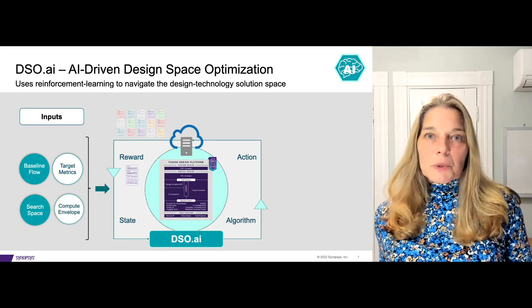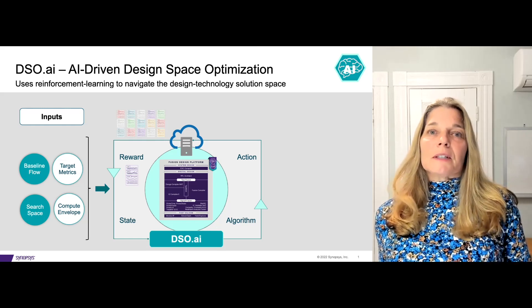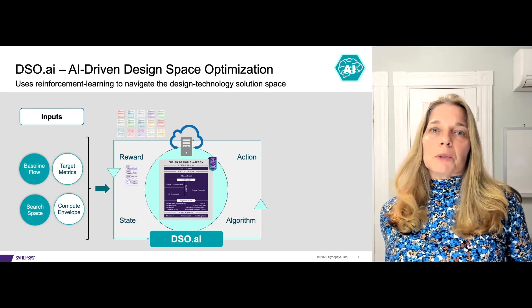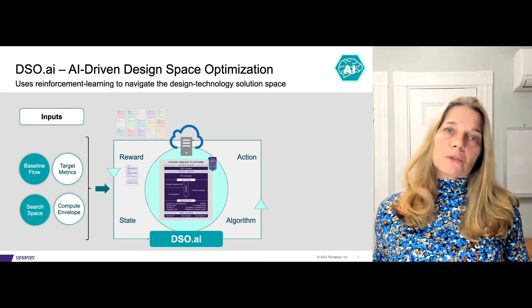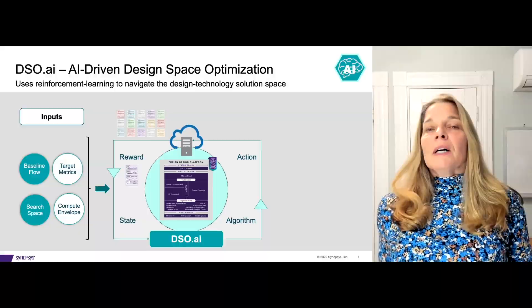The last input is the compute envelope — very important. DSO needs to know what's available in terms of your machines, your cores, your memory, basically your compute farm. And as output from the learning system, can designers expect anything they can use for tape out? What else do they get?